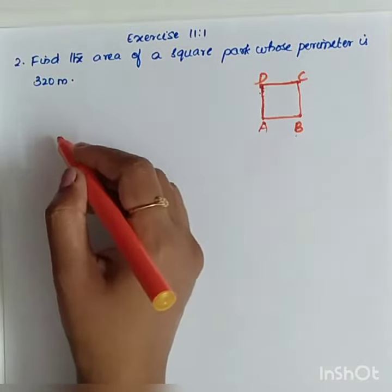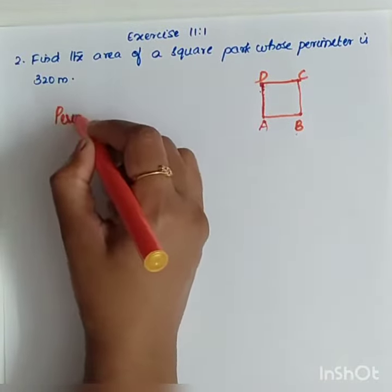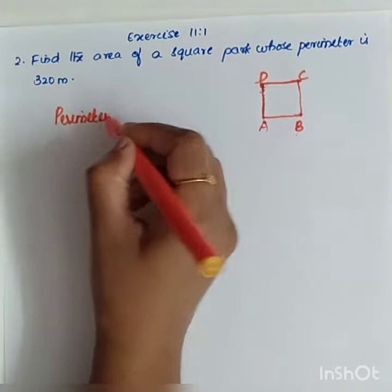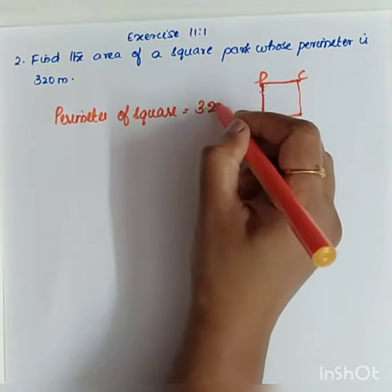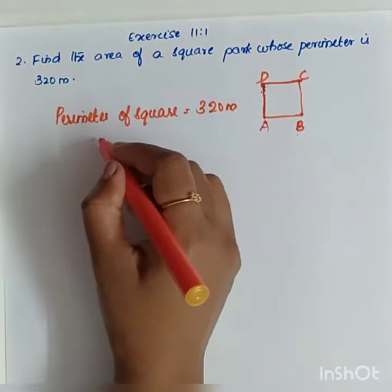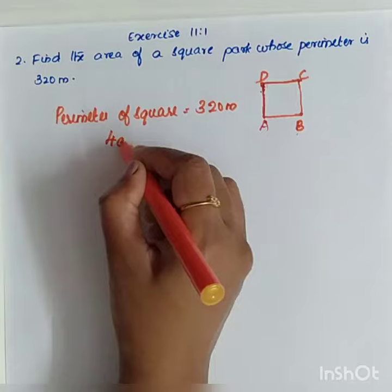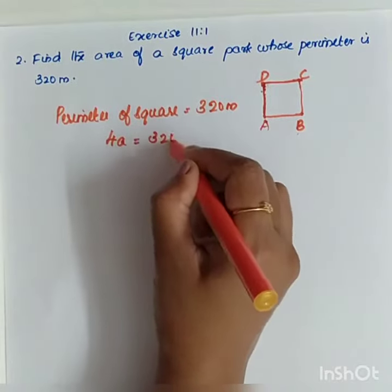is given? The perimeter of the square is given. We know that the perimeter of the square is equal to 320 meters. What is the formula for perimeter of the square? 4a, right? So 4a equals 320